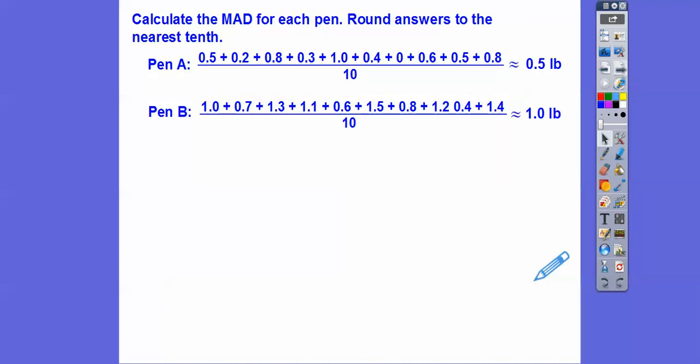What that means is since pen A's MAD is less, premium growth feed produces less variability in weight.